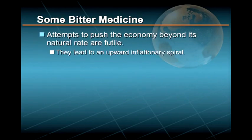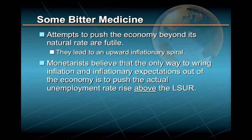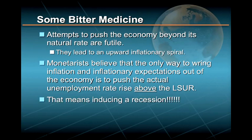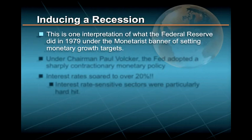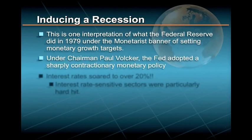In this situation, monetarists believe that the only way to wring inflation and inflationary expectations out of the economy is to have the actual unemployment rate rise above the LSUR — and that means only one thing: inducing a recession. This is at least one interpretation of what the Federal Reserve did, beginning in 1979, under the monetarist banner of setting monetary growth targets.